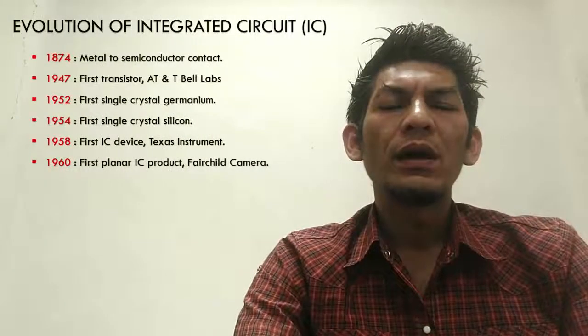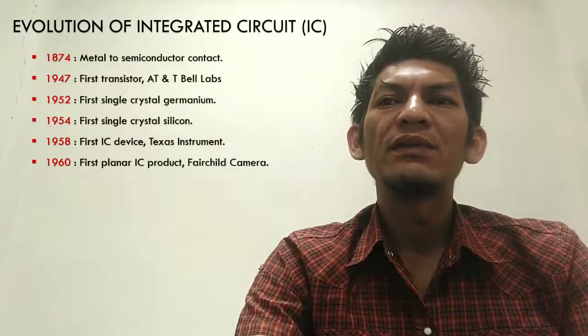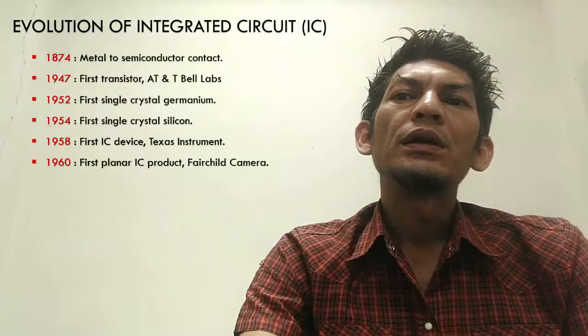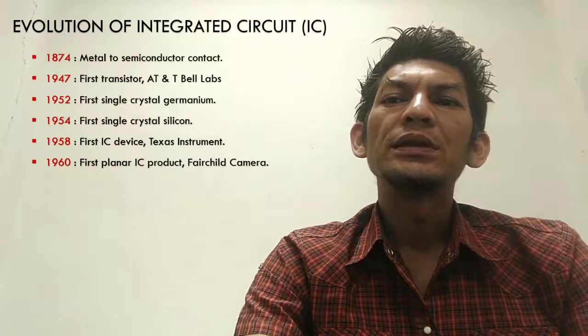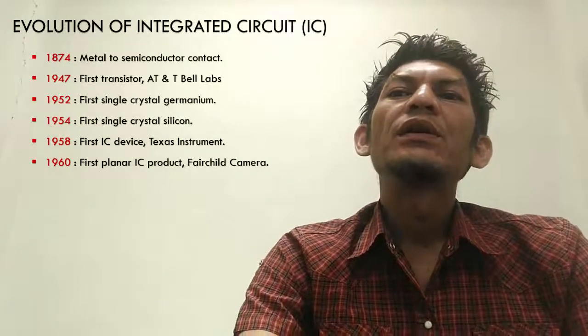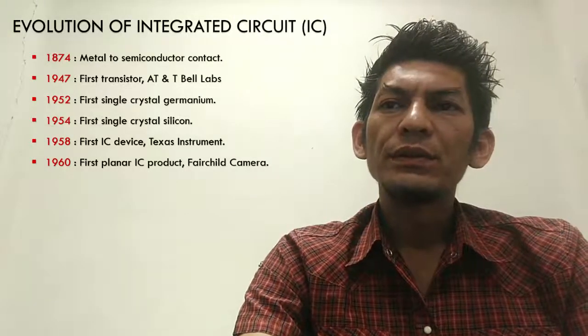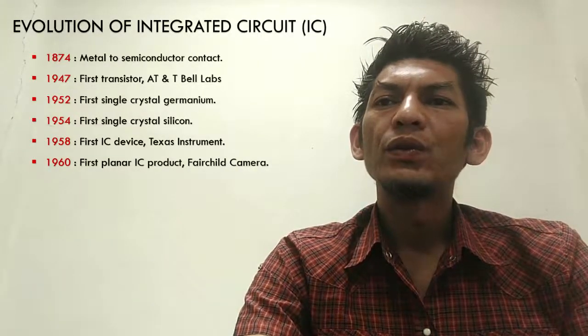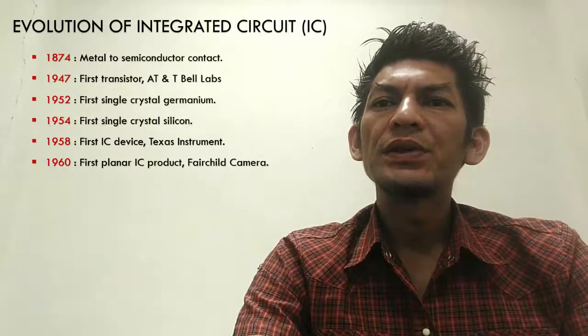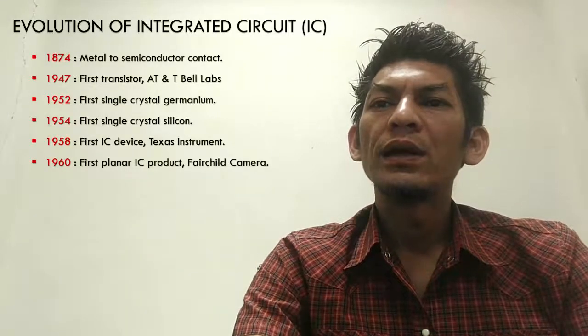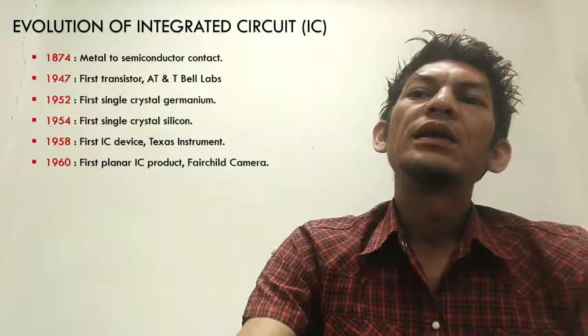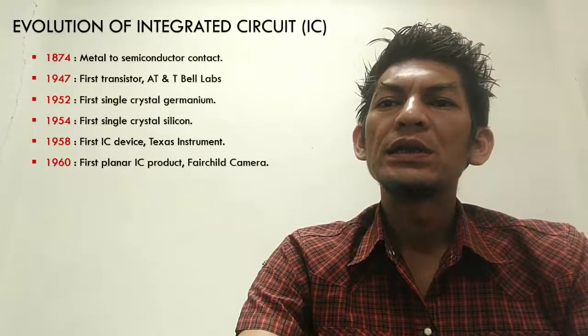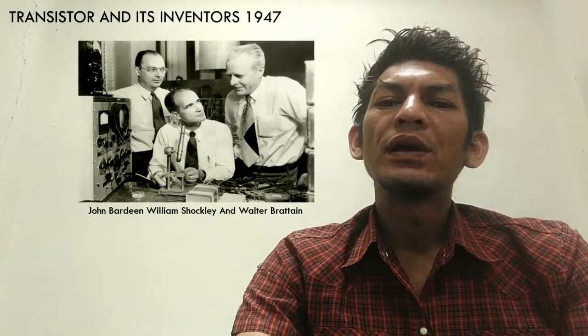For the evolution of integrated circuit, we have a lot of history which starts on 1874 about metal to semiconductor contact, until 1960 for first IC planner. The first transistor was invented in 1947, then we have a semiconductor crystal germanium in 1952, first single crystal silicon in 1954, and the first IC device was invented in 1958. On 1960, the first planar IC was built.